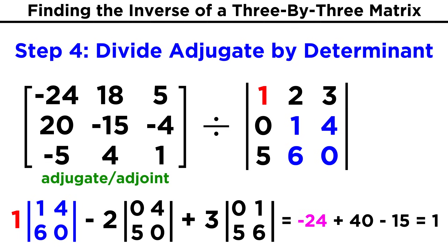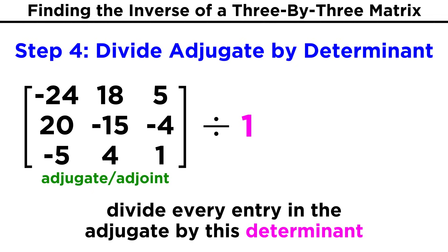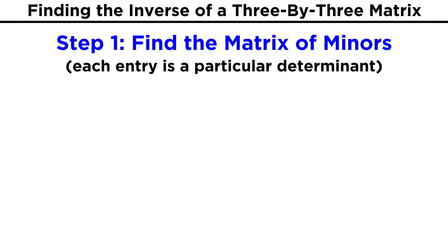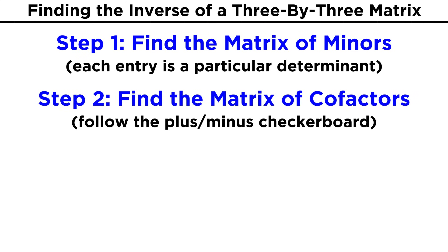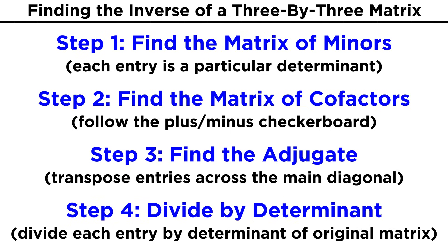We just have this first entry times the determinant of this two by two matrix, minus the second entry times the determinant of this two by two matrix, plus the third entry times the determinant of this two by two matrix. Whatever we get, we divide the last matrix we had by this value — dividing every entry in the matrix by that value — and that's what we are left with for the inverse of the original three by three matrix. To summarize the four steps: first we found the matrix of minors; then we applied the checkerboard pattern of signs to find the matrix of cofactors; then we transposed all entries across the diagonal to get the adjugate; and lastly, we divided by the determinant of the original matrix to get the inverse. This is essentially the same algorithm as for a two by two matrix, just many more steps.